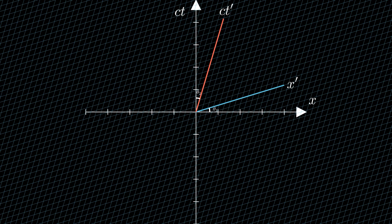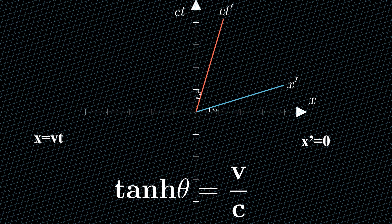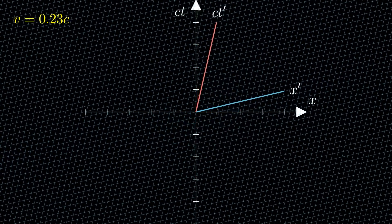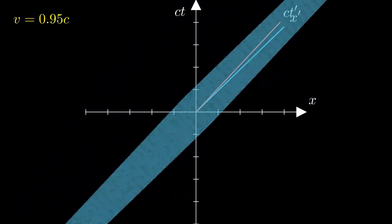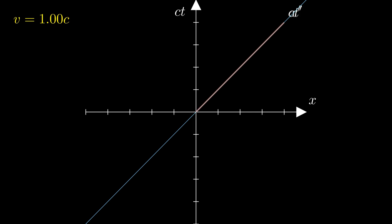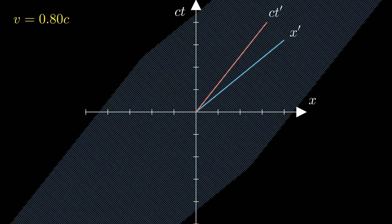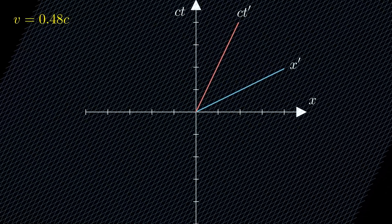This tilt can be analyzed as follows. For a stationary observer, the world line of a moving observer is given by x equals vt. However, a moving observer does not perceive themselves as being in motion — from their own perspective, their position remains unchanged. Since the moving observer follows their own world line, their time axis must lie along this world line. This results in a tilt of the time axis, with the inclination given by hyperbolic tangent theta equals v over c. The x-axis tilts by the same amount. This approach provides a visually intuitive representation, and the tilting of the axes illustrates the geometric meaning of Lorentz transformations, offering a way to visualize relativistic effects like time dilation and length contraction.